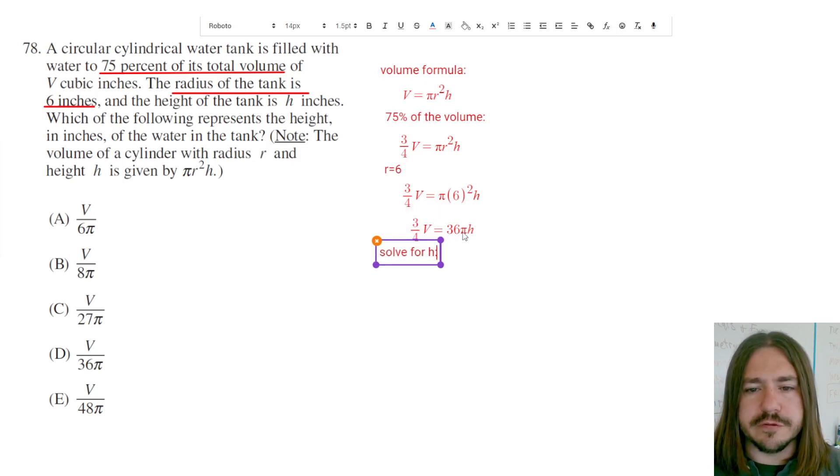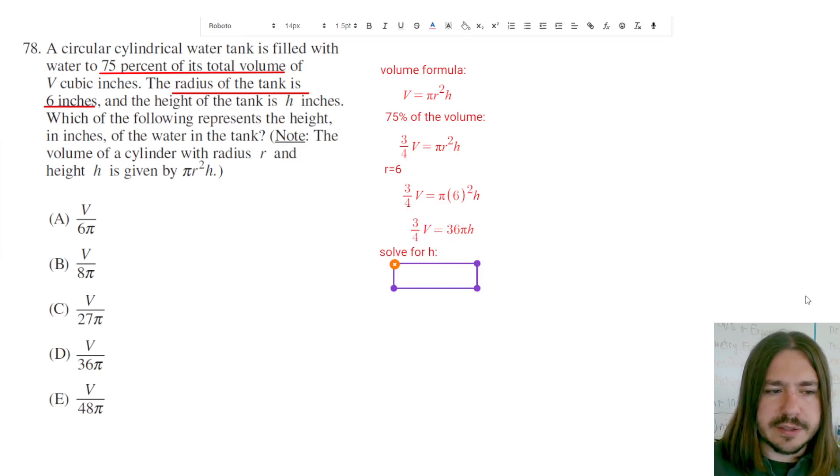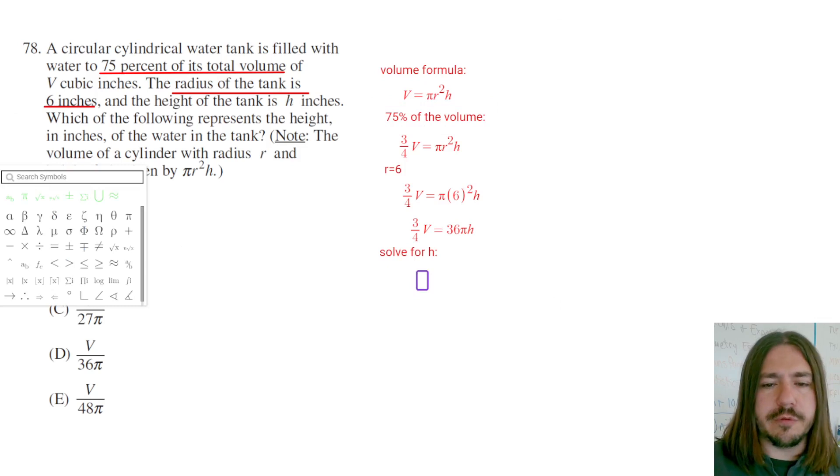First, I'm going to divide by 36 pi. So I'm going to rewrite this a little bit. On the left-hand side, I'm going to rewrite it as 3v over 4. And then I need to divide both sides by 36 pi, not h but pi.